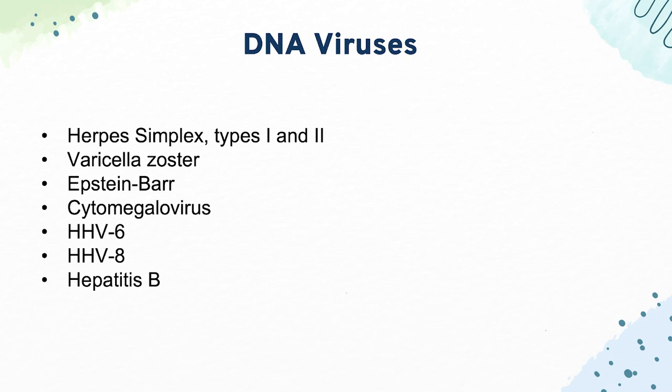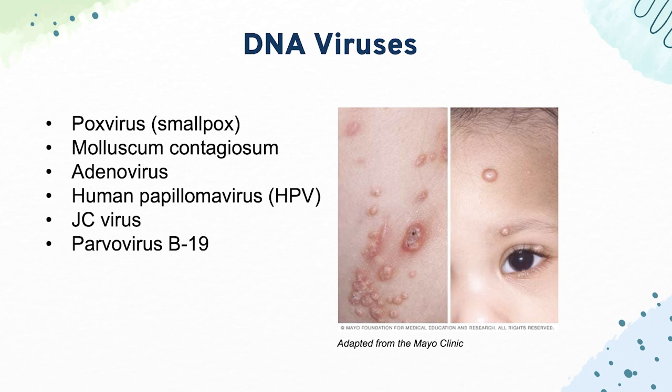Next, we have poxvirus, also called smallpox. It's been eradicated due to our vaccine, but students should know that vaccine was live attenuated. Another kind of poxvirus is molluscum contagiosum, known for flesh-colored papules with an indent in the middle. Then we have adenovirus, which causes conjunctivitis and acute hemorrhagic cystitis — blood in the urine.